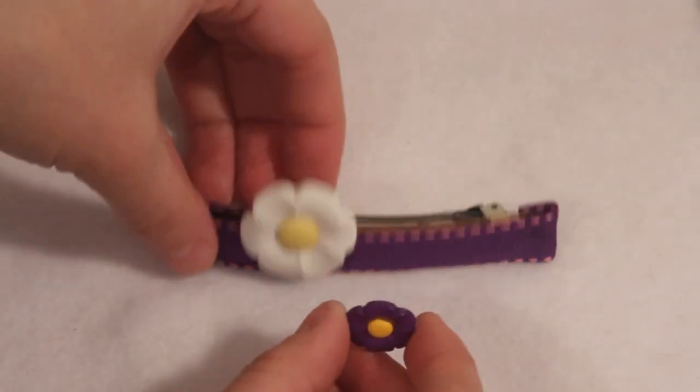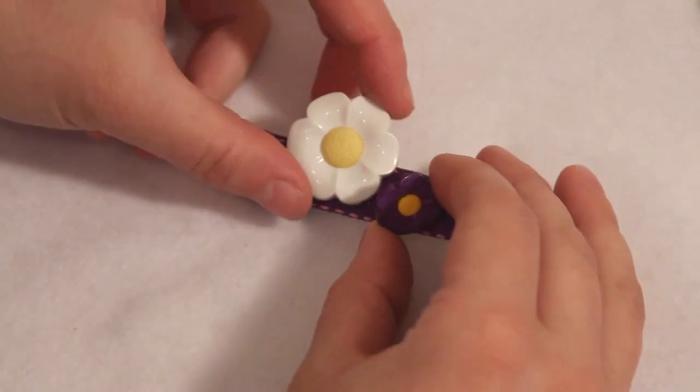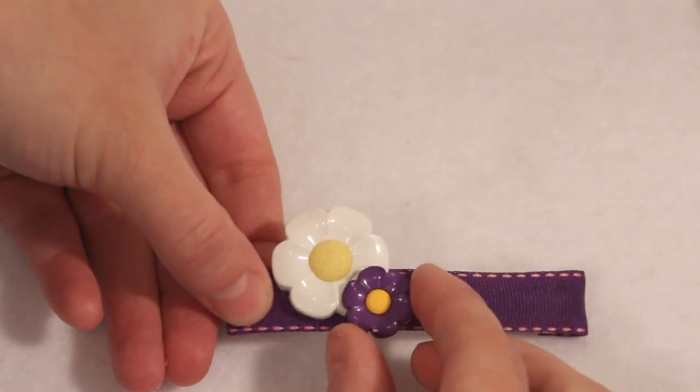I let that dry for a few minutes then placed the second flower so it is resting on the first and the shank is glued directly to the ribbon.